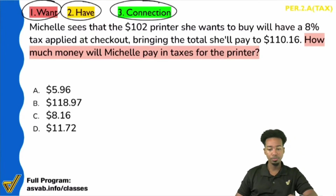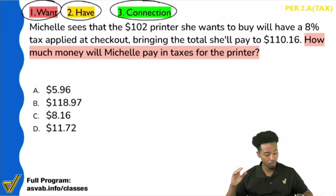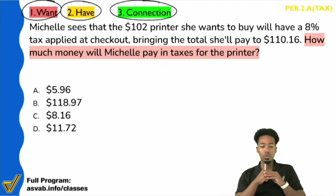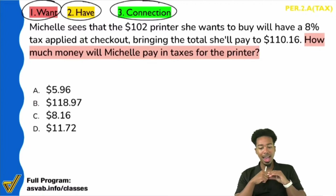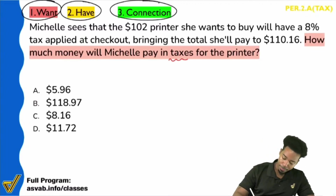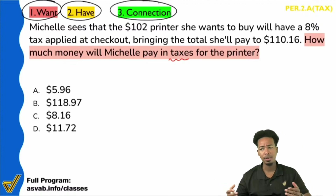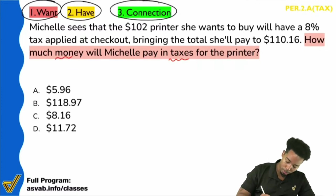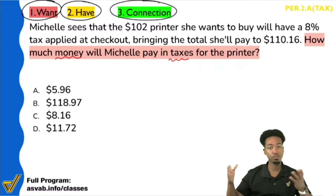Can you describe in one word what we are looking for here? We're looking for how much we're going to pay in taxes. There's another keyword to highlight as well — are we looking for the percent tax or the amount of the tax? We're looking for the payment, the money amount. How much money will Michelle pay in taxes for the printer?